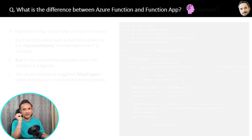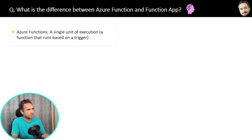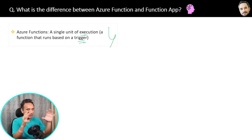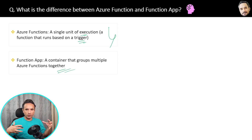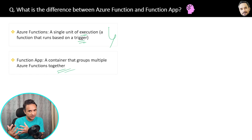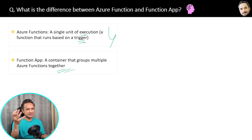Here is a short question you may already know: what is the difference between an Azure Function and a Function App? An Azure Function is a single unit of execution — a function that runs based on a trigger. A Function App is a container that groups multiple Azure Functions together. When you create an Azure Function in Azure, you first create a Function App, and inside that you create your actual Azure Functions. Function App is just a container; Azure Function is the actual code, and you can place many Azure Functions inside one Function App.